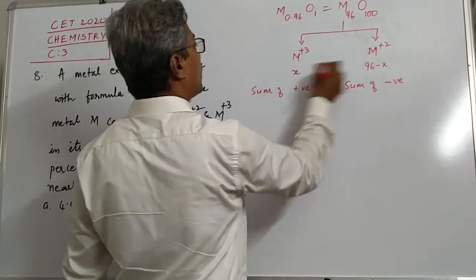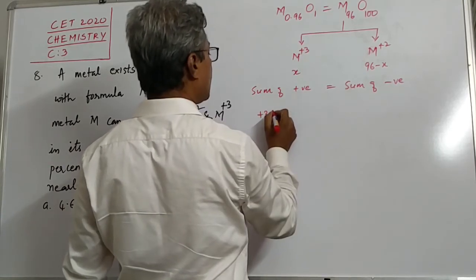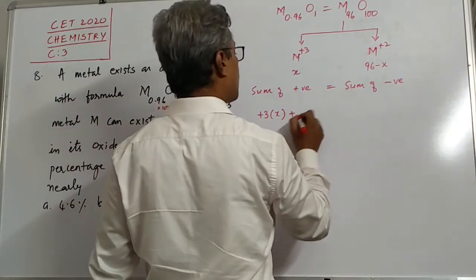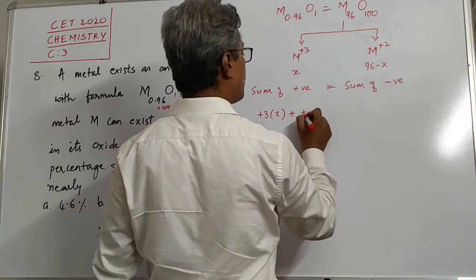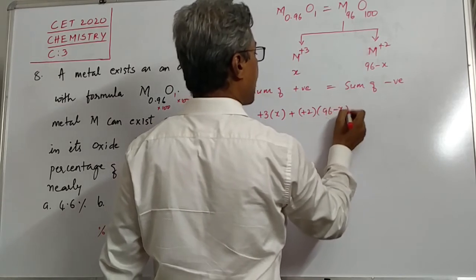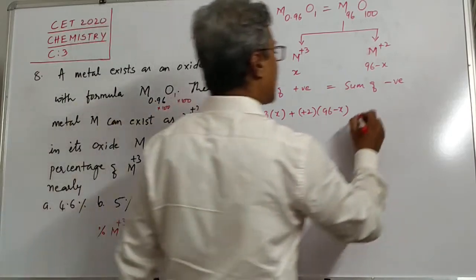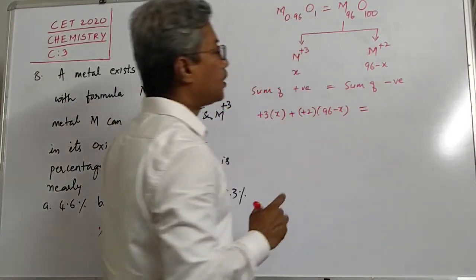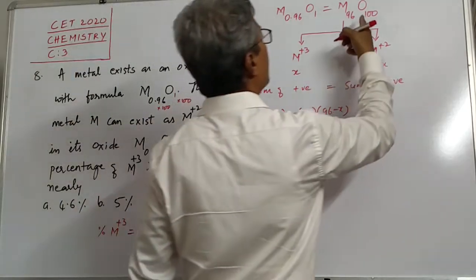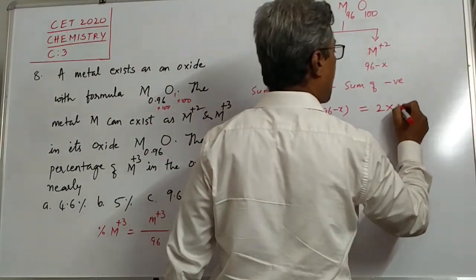Okay, now look at this. Principle is sum of all positive charges must be equal to sum of all negative charges. Here, metal, total metals are how many? This is plus 3 into how many? X, this is one metal. Plus another metal is, its oxidation state is plus 2 into how many? 96 minus X. Well, this will be the total positive charges of metal. And that must be equal to total negative charges of oxygen. That sign, don't use anymore. Each oxygen has got two negative charges. So 2 into 100.